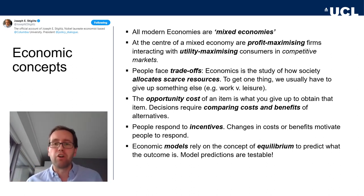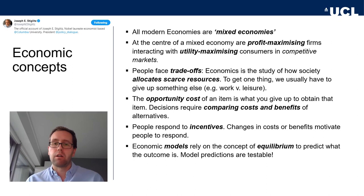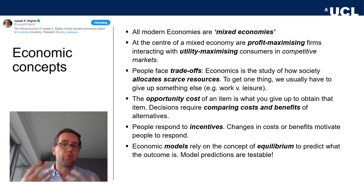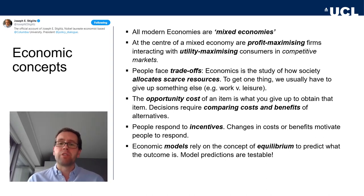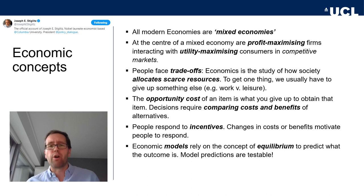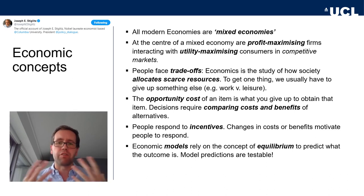So profit-maximizing firms are the core production-side agents in modern economies. On the other hand, we have consumers — all of us. We buy things, we don't buy things. Economics often assumes that consumers are utility-maximizing, which basically means that we choose things that we want and don't choose things that we don't want. We can discuss more detailed definitions in the seminars, but we'll leave it at that for now.